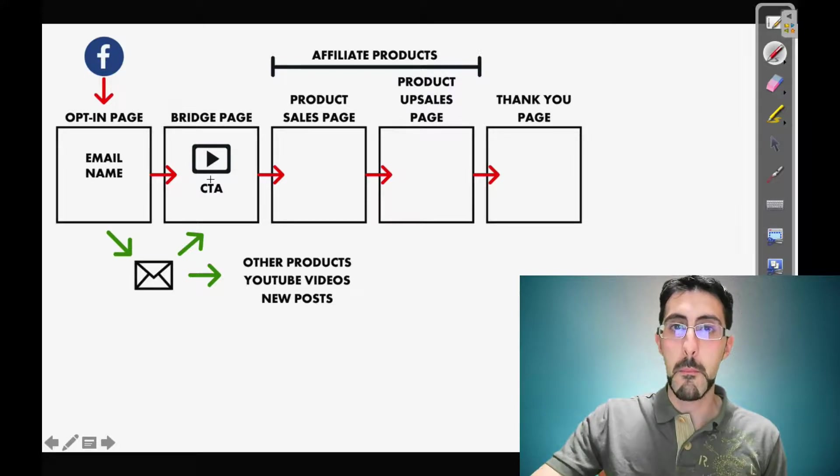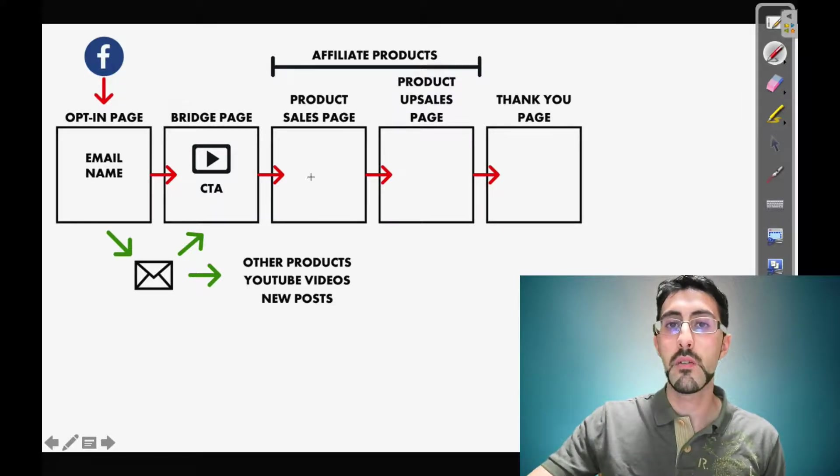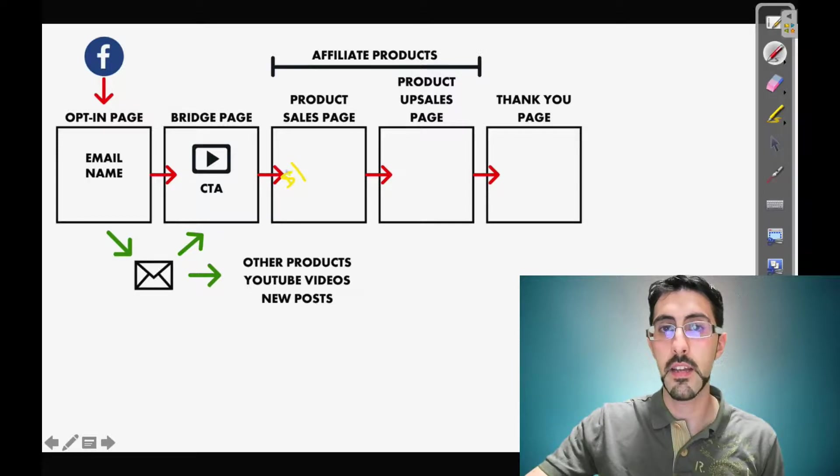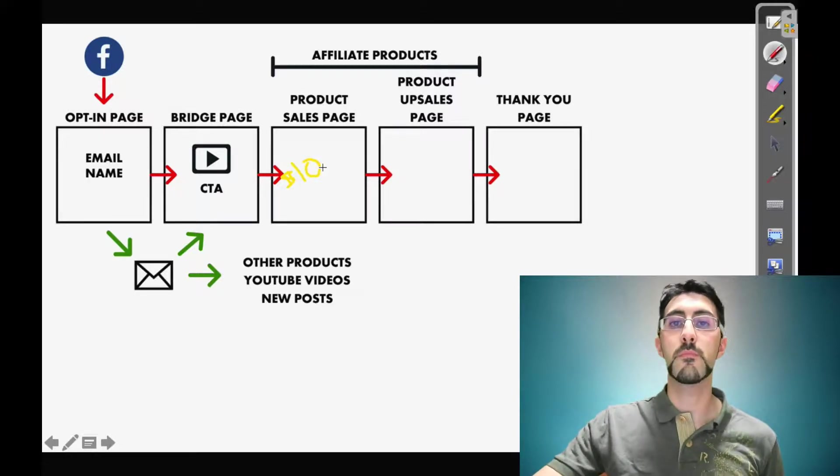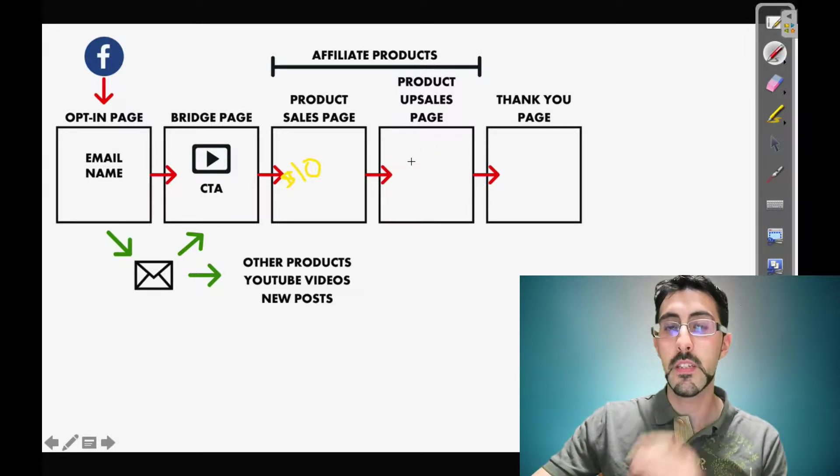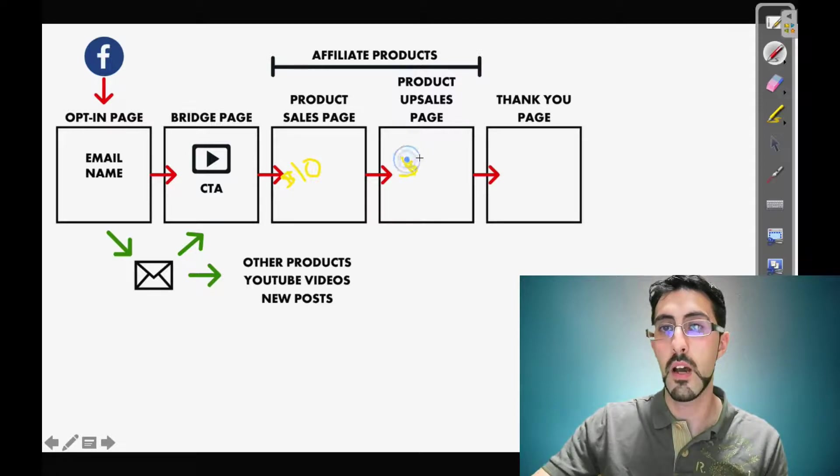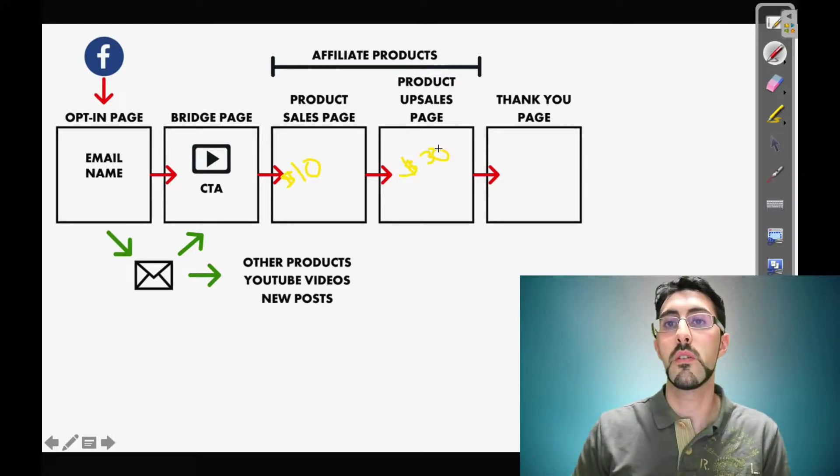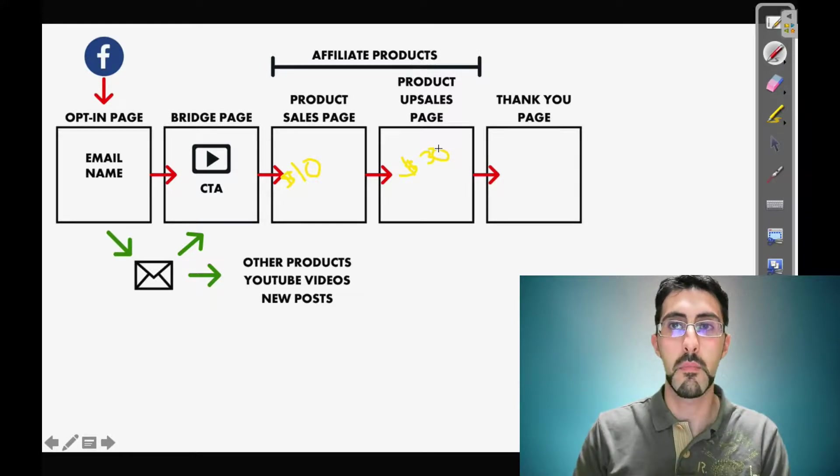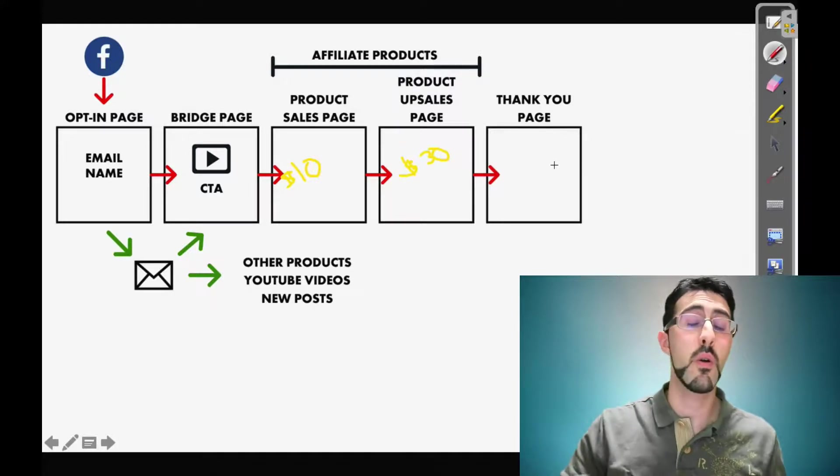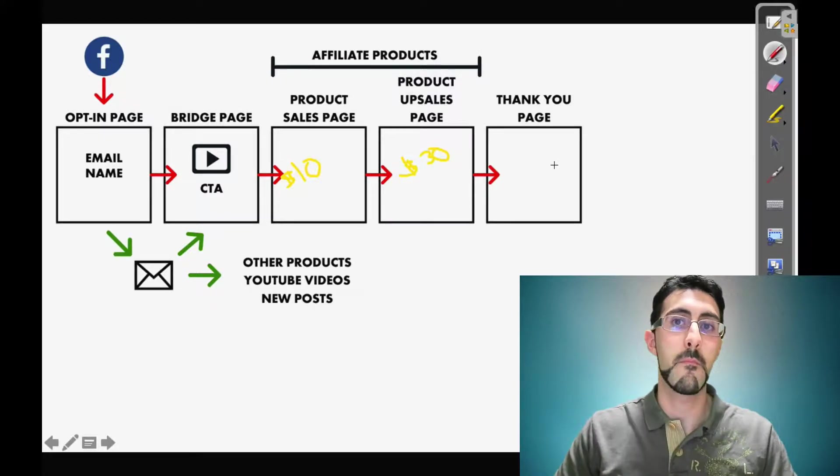After this bridge page, we are going to place, let's say, a ten dollar product. And after this front-end sale, we are going to place, for example, a thirty dollar product as an upsell. And then after that, a final thank you page, or if you want another upsell if it's related with the front-end product.